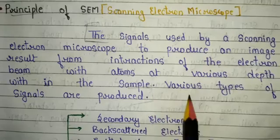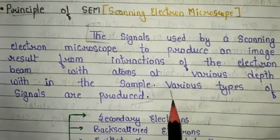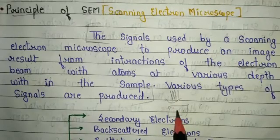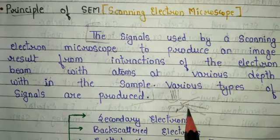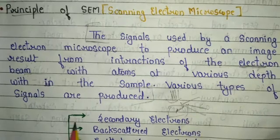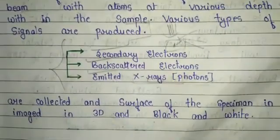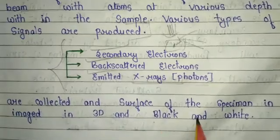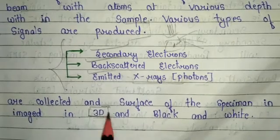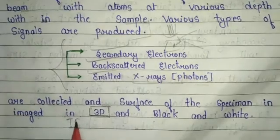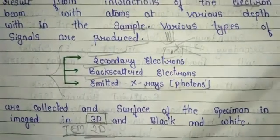The basic principle is: we use an electron beam in the scanning electron microscope. When the electron beam is bombarded onto the sample, the atoms of the sample interact with the electron beam and three types of signals are produced: secondary electrons, backscattered electrons, and emitted X-rays. These three types of signals are collected and the surface of the specimen is imaged in 3D and black and white. When we use TEM (transmission electron microscope) we get a 2D image — this is the basic difference between SEM and TEM.